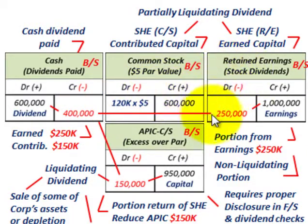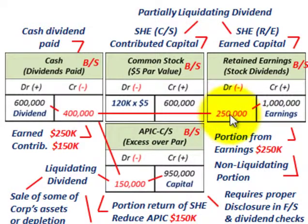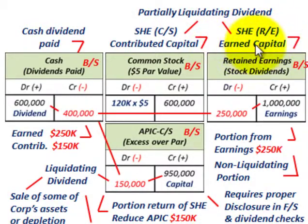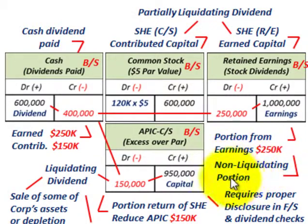$250,000 is coming out of retained earnings. We have $1,000,000 sitting in retained earnings, and we're going to reduce it by $250,000. That's the portion from our earnings, because retained earnings represents the earned capital — the income sitting in the company. So the $250,000 paid in dividends is the non-liquidating portion.